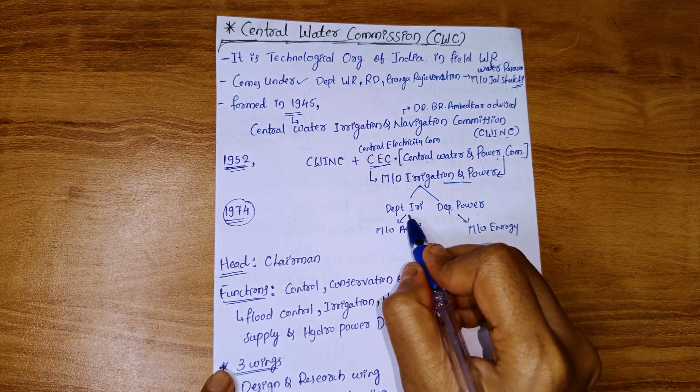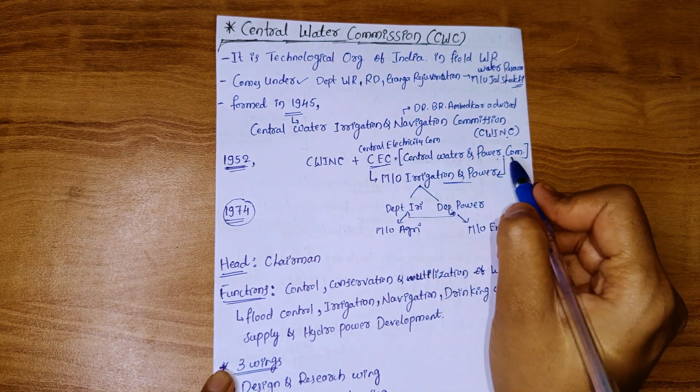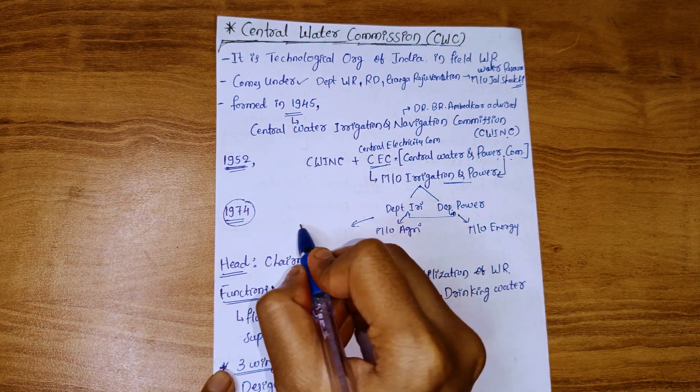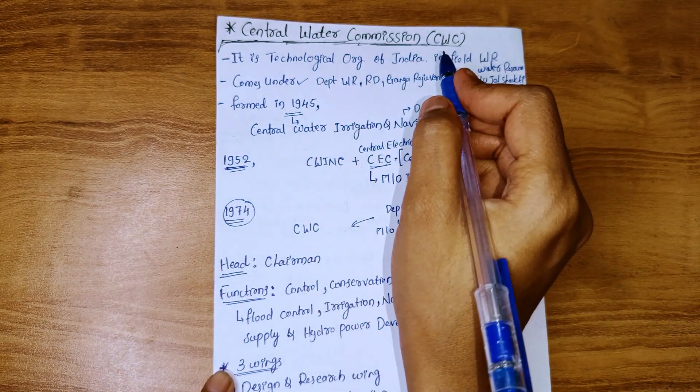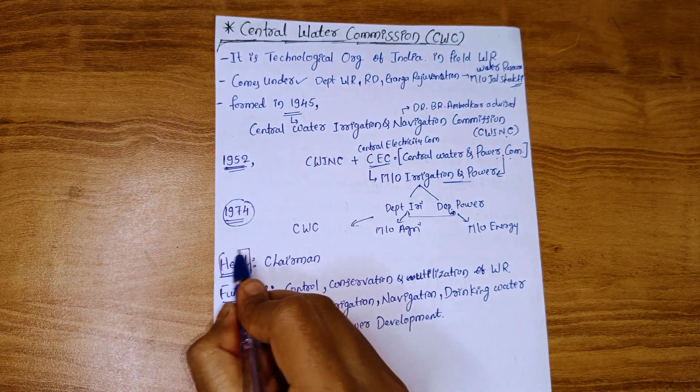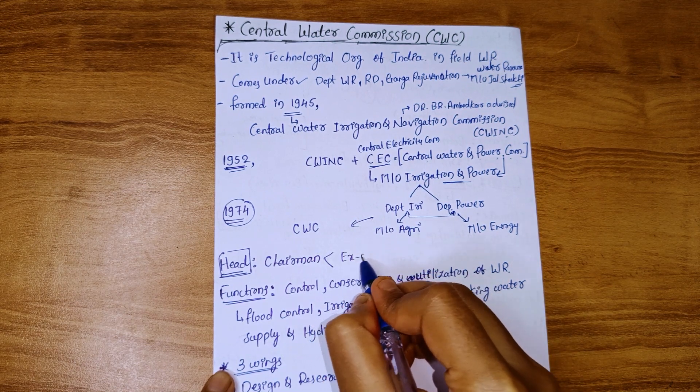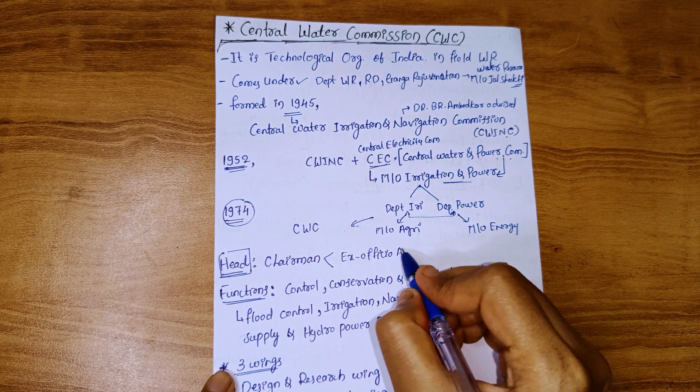Due to the separation of these two departments, the Central Water and Power Commission also separated. The water wing was established as CWC (Central Water Commission). The head of CWC is the Chairman, who has the status of Ex-Officio Secretary.